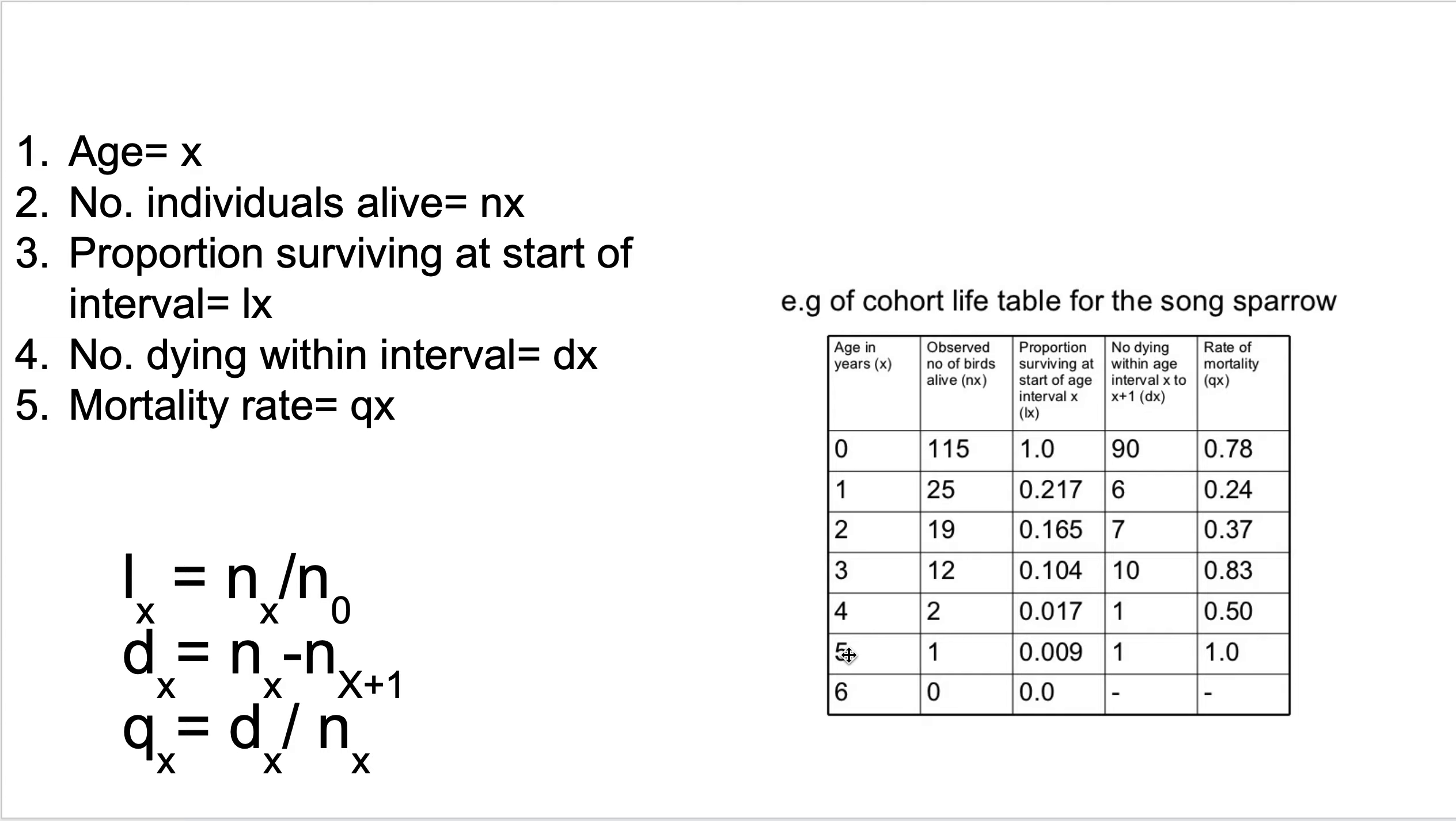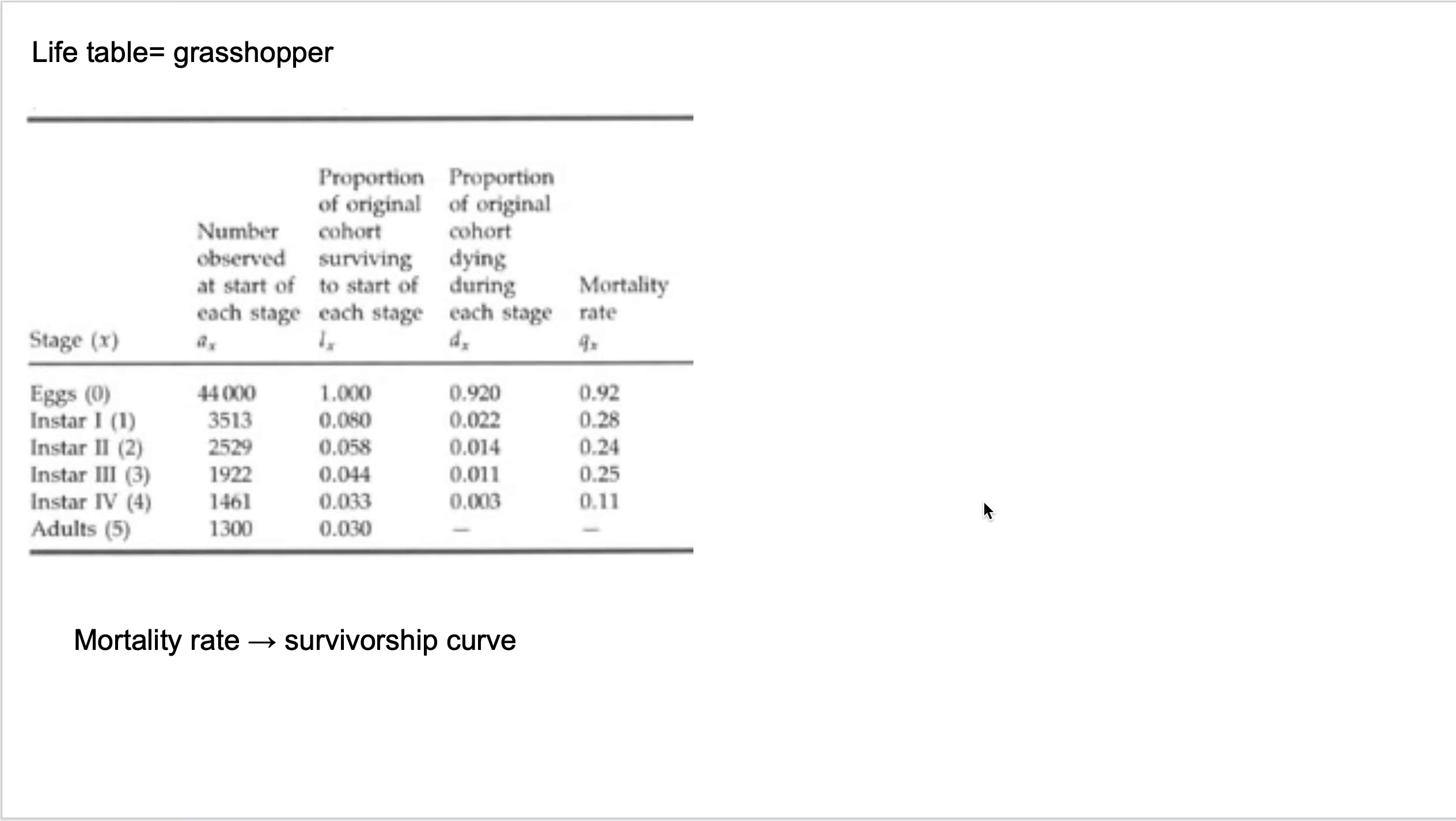For year 5, our proportion surviving at the start of interval year 5, that would be n5, which is 1, over n year 0, which is 115. The number that die is the interval over the n of the next interval. So that's how you figure out the proportion that are dying. And then the rate of mortality is the number that are dead, that die, over the number that you started with. So this is 90 over 115. If we look at this next one for year 1, Qx, which is our rate of mortality for year 1, it's dx, which is our number that died in year 1, which is 6, divided by nx, which is 25.